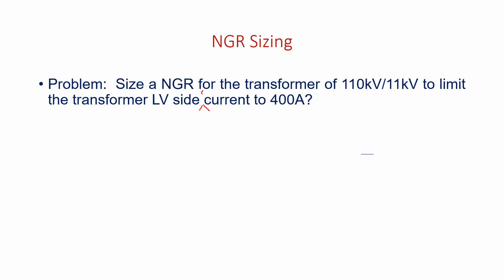We have to reduce transformer LV side single line to ground fault current to 400 amps. This is my objective. You can observe the transformer secondary line voltage is 11 kV.